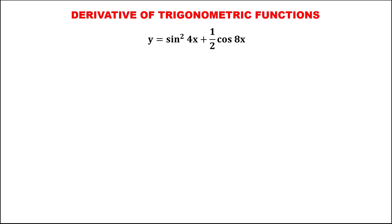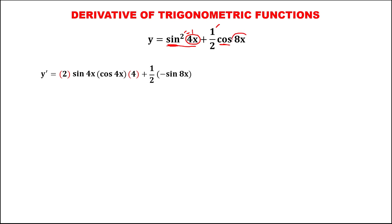For this given, y prime equals — using the power formula, bring down this exponent, then reduce the exponent by one, so we have sine to the power one, four x — then times the derivative of four x, that's four, then plus — bring down this constant, then times the derivative of cosine which is negative sine — times the derivative of eight x, that's eight. So we have two times sine four x times cosine four x.